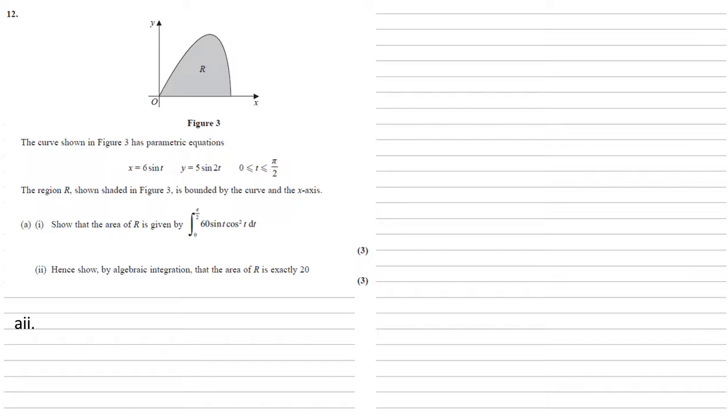For part 2, hence show by algebraic integration that the area of R is exactly 20. So that hence tells us we need to use part i, where we worked out what the integral is. We're looking for the integral between 0 and pi over 2 of 60 sine t cos squared t dt.